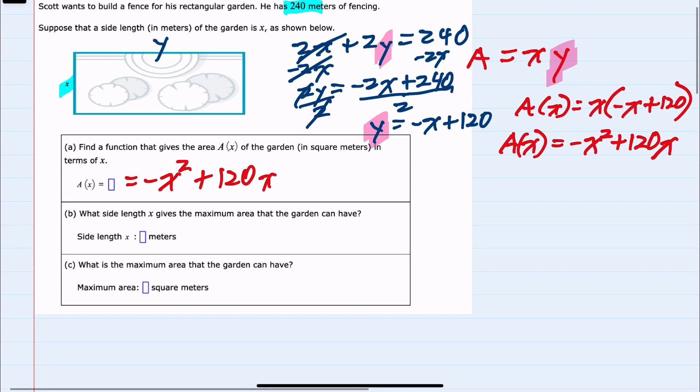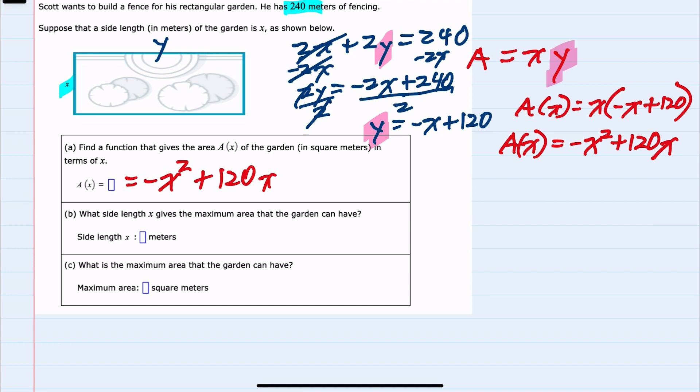Moving to part b, we're asked what side length x gives the maximum area for the garden. So we know that this is a quadratic, and its leading coefficient is negative, so the quadratic would have an upside-down shape where its maximum value is here at its vertex, and we know that the x value of the vertex happens at negative b over 2a.